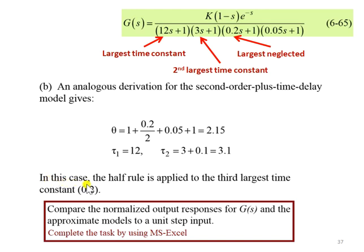For this case, the half rule is applied to the third largest time constant, as compared to the previous example, which is first order plus delay time.